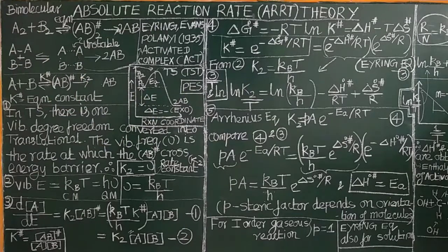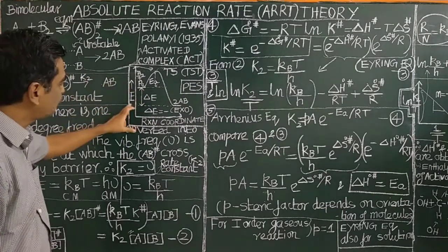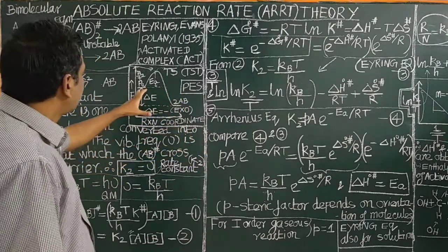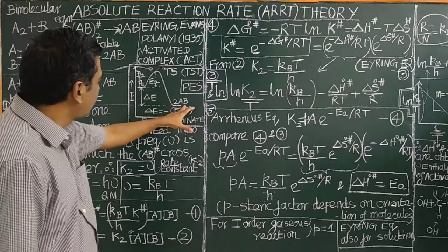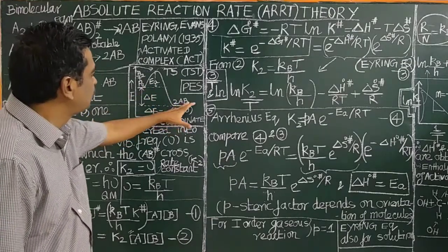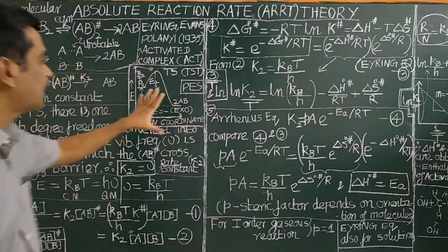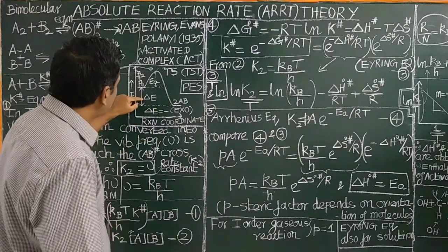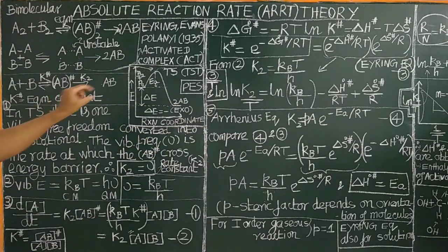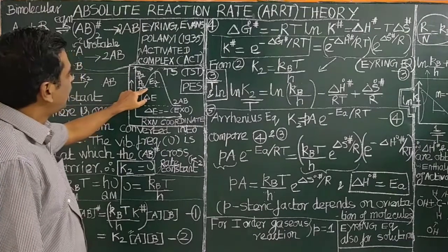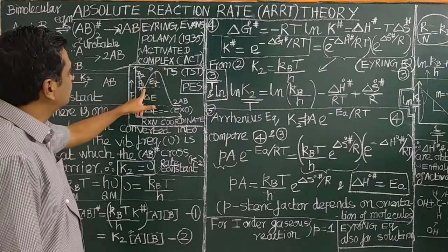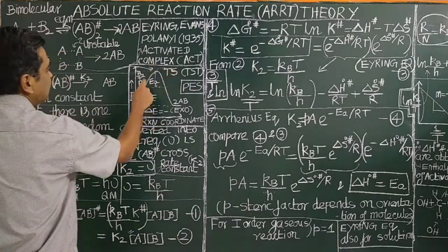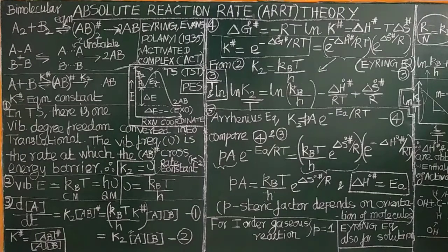This is the potential energy diagram for this reaction. The plot of energy versus reaction coordinate obtained is called the potential energy surface diagram. Here, this is the energy of the reactant and energy of the product. Delta E is negative — this is an exothermic reaction. This is the potential energy surface diagram for an exothermic reaction. Similarly, you can draw it for an endothermic reaction. The activation energy is the energy difference between the transition state energy and the energy of the reactants.